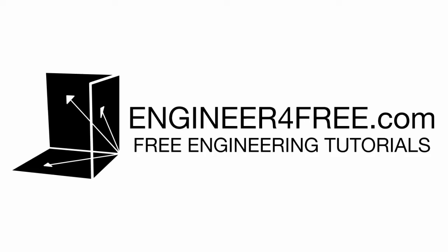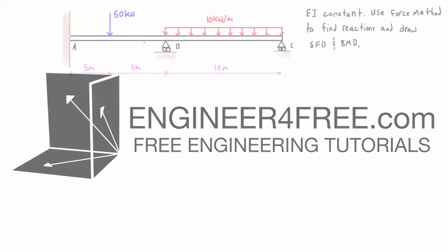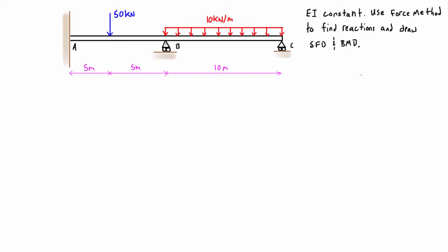Welcome back. In this video we want to use the force method to solve this statically indeterminate beam. When we check it out, it is two degrees indeterminate. We've got three reactions here at A, a reaction at B, and a reaction at C. So we have five unknowns and three equations of equilibrium, making it two degrees statically indeterminate.